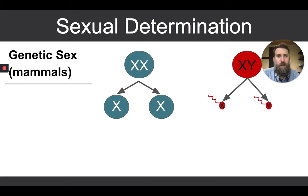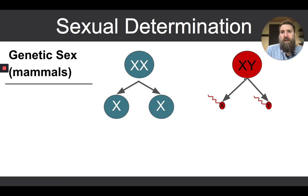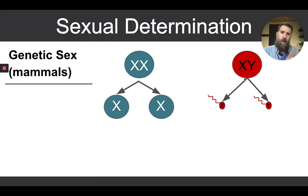So, genetic sex in mammals — this will probably be a review for many of you, but let's go through it to make sure we're all on the same page. An individual has a genotype. We've got 23 pairs of chromosomes, including a pair of sex chromosomes. There are two different types: an X and a Y. Since you have a pair, the only possible combinations are XX or XY. YY is not a viable genotype — that genotype would not fully develop into a viable organism.